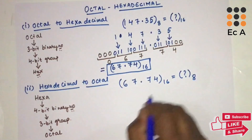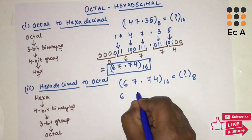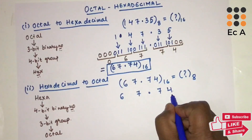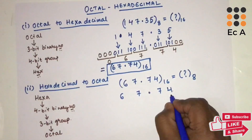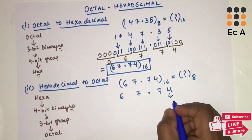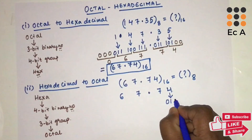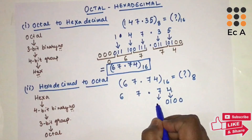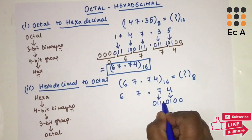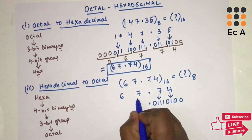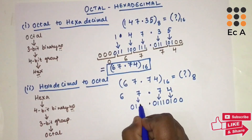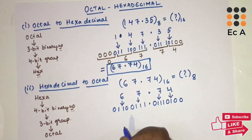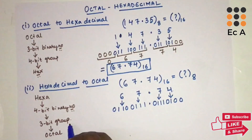Let us take the same example: 67.74 base 16, to be converted into the equivalent octal number. Writing the 4-bit binary equivalent: for 6 it is 0110, for 7 it is 0111, then after the point for 7 it is 0111, and for 4 it is 0100.